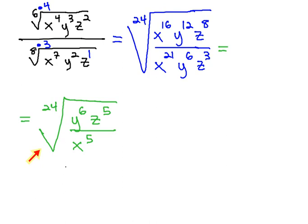So what we're going to have to do is rationalize this denominator. Using the index of 24, we see we need 24 factors to clear out each radical.